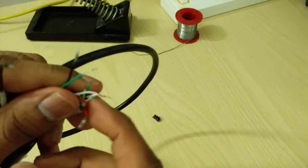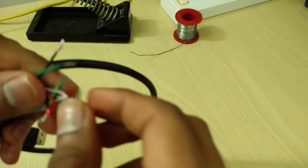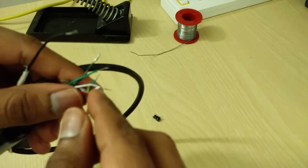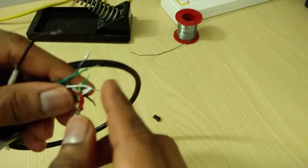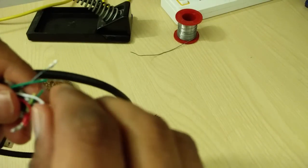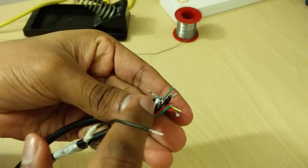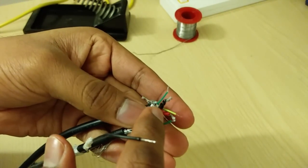Next step is to solder all the white wires together. This is also called as the D minus. White is also called the D minus. Red is the positive and white is the D minus. Solder all the D minus wires together. I have soldered all the white wires together.